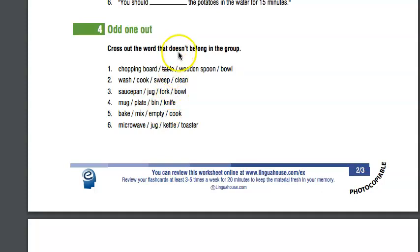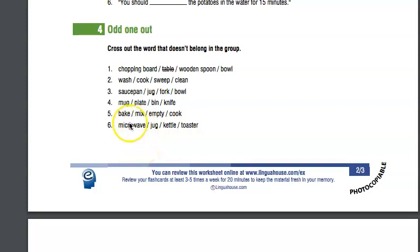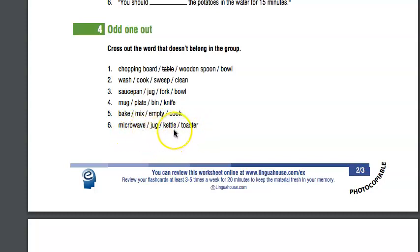Number six: microwave, jug, kettle, toaster. We remember the microwave; a jug - you can put milk, water, or juice in it; we boil the kettle to make tea or coffee; and the toaster. This is a tricky one - the odd one out is jug, because everything else needs electricity to use. The jug doesn't need electricity.